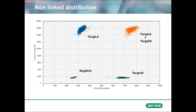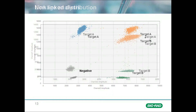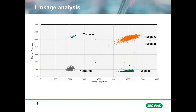This looks like any other typical 2D plot. On the other hand, in the plot of a linked sample, we again see four clusters of droplets, but there is a noticeable difference. The double positive group seems to have more droplets than normal. Normally, this group is composed of droplets that randomly had both targets land in them, but in the case of linked events, it contains both droplets that are randomly co-occupied and droplets that have both targets because of linkage. In essence, linkage causes an overabundance of droplets in the top right cluster.